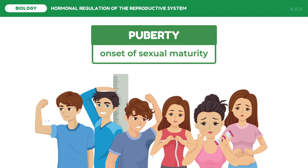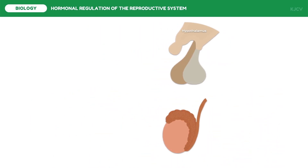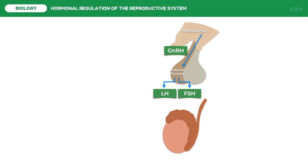Let us first discuss the primary reproductive development in males. Sexual maturity in males commences when the gonadotropin-releasing hormone or GnRH stimulates the anterior pituitary to secrete both LH and FSH. During the pre-pubertal period, GnRH activity is inhibited. The pubertal process is initiated by an increase in GnRH activity sometime between 8 and 12 years of age. Early in puberty, GnRH secretion occurs only at night, causing a brief nocturnal increase in LH secretion.